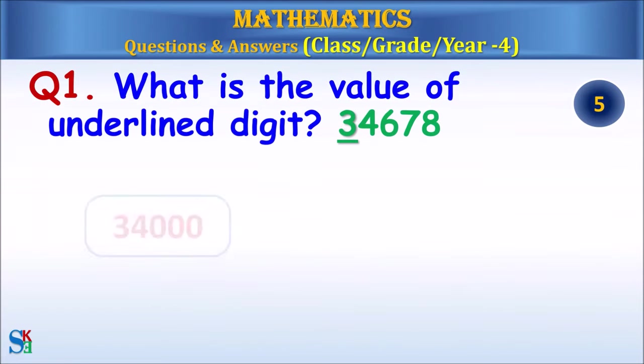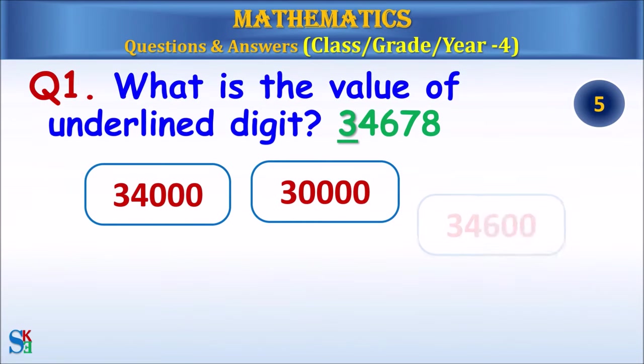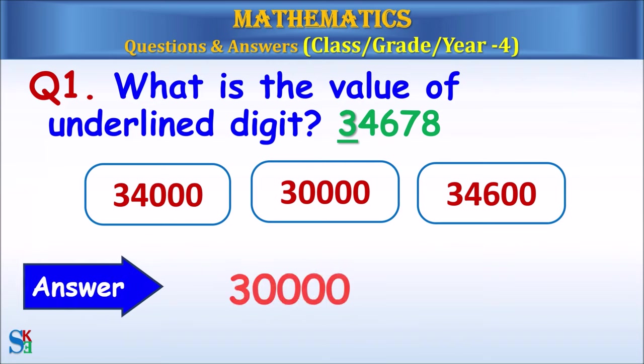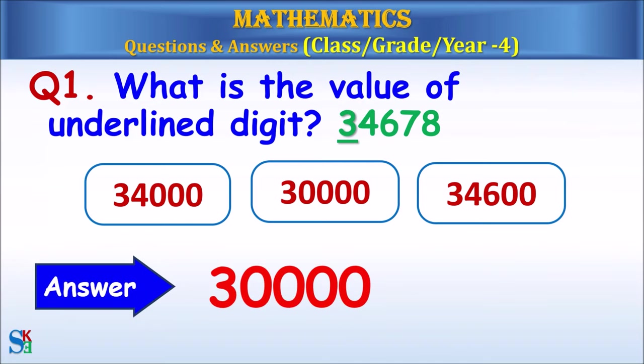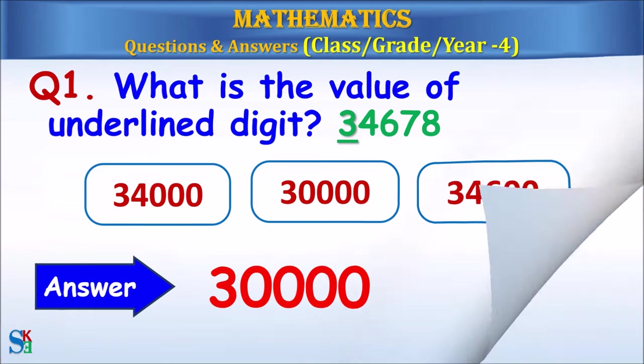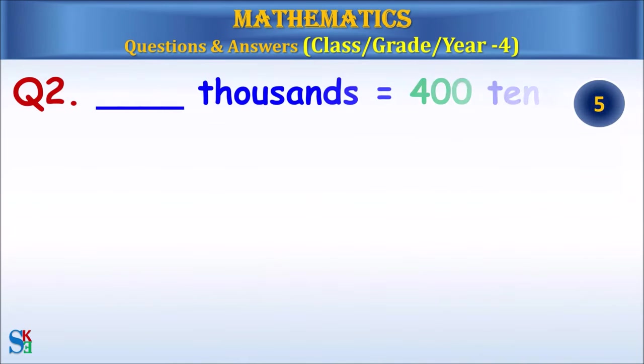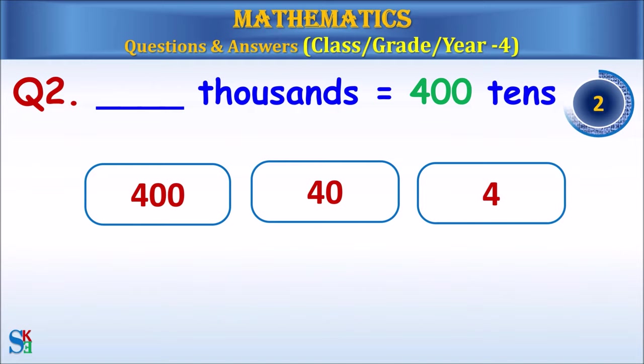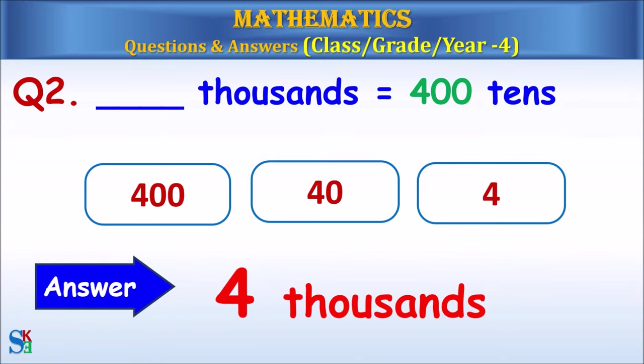Question 1: What is the value of underlined digit? The answer is 30,000. Question 2: How many thousands equal four hundred tens? The answer is four thousands.